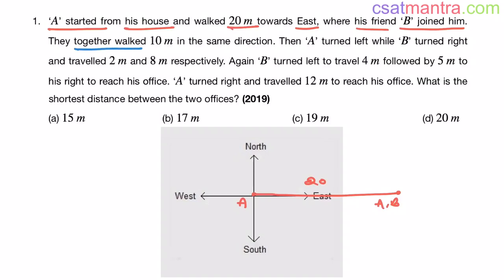Now they together walk 10 meters in the same direction. Together, 10 more meters. Then A turned left while B turned right. This is left, this is right. And they traveled 2 meters and 8 meters respectively.